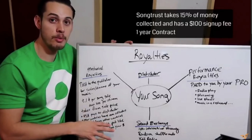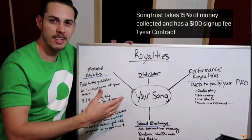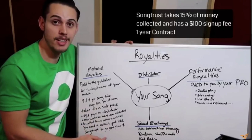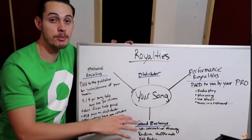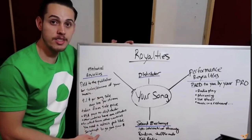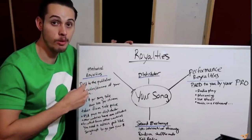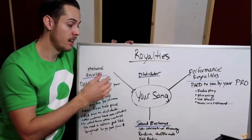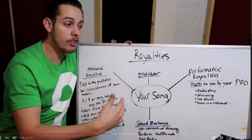They take a percentage and charge an upfront one-time fee to get signed up, so you are in a contract with them. Once you sign up with an administration publisher, you can't jump to others right away — it's either one year or more. With SongTrust, they charge $100 to get signed up and take 15% of all publishing money they collect for you.